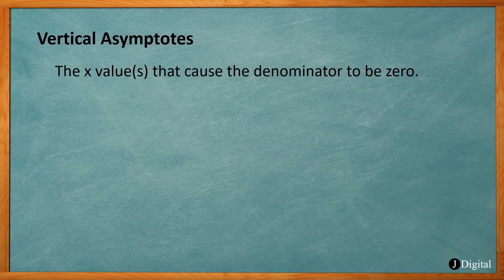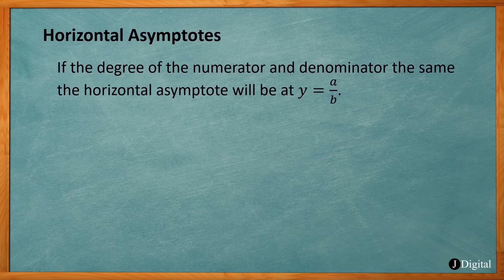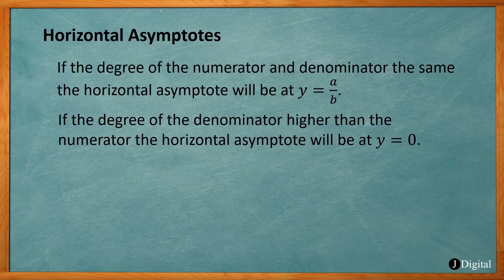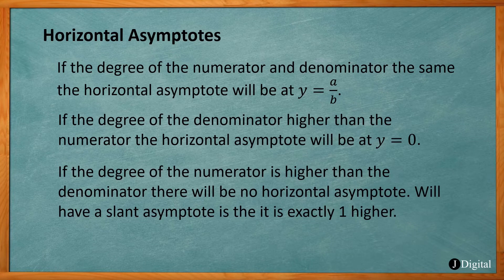To summarize: Vertical asymptotes occur when the function is undefined — when you divide by 0. Set your denominator equal to 0 to find those x values. For horizontal asymptotes: if the degree of numerator and denominator are the same, the HA is y = a/b (ratio of leading coefficients). If the denominator has a higher degree, the HA is y = 0. If the numerator has a higher degree, there is no horizontal asymptote, but if it's exactly one higher, you'll have a slant asymptote. I hope this video helped you understand vertical and horizontal asymptotes.